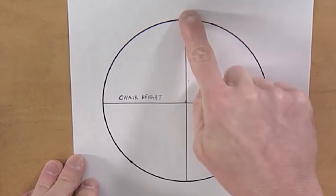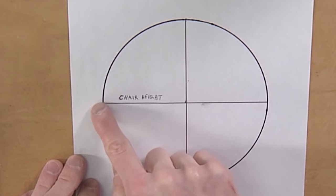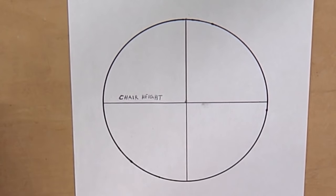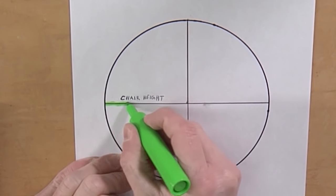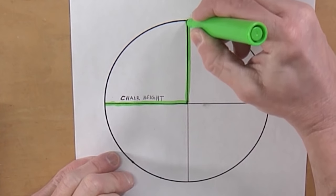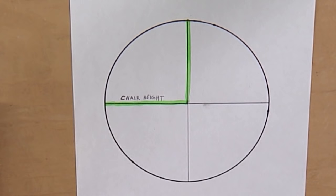So I have a circle drawn out and this line coming across and up, that's going to represent the chair height. And in this case, not that it matters, but my chair height was 19 inches. Alright. The first angle that I'm going to figure out is my splay. And I said my splay was at 11 degrees.